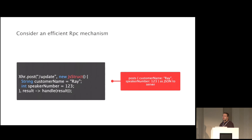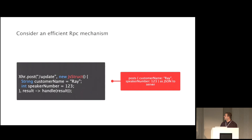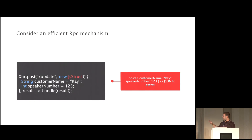Consider the effect on something like an RPC mechanism. You could make an incredibly light RPC mechanism to call a server with XHR. Imagine an XHR class with a static method post() — the first argument is a URL, the second is a JSON object, and the third is a callback. All you'd have to do is create an anonymous inner class subtype with two fields like customerName and speakerNumber, then pass a lambda callback. That's pretty succinct compared to what you'd have to do today in GWT or Java, and it's close to what you'd write in JavaScript, but with type checking in your IDE.